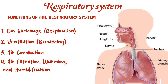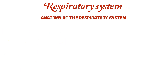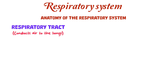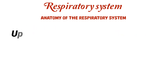So let's start with the anatomy of the respiratory system. It consists of two main parts: the respiratory tract, which conducts air to and from the lungs, and the lungs, which is where gas exchange occurs. The respiratory tract is divided into the upper and the lower respiratory tracts.